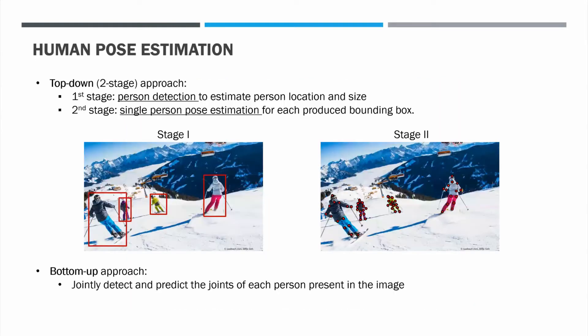There are two main approaches for doing it. The top-down methods take a two-staged approach consisting of a person detection component and a single-person pose estimation one that is run for each produced bounding box. The second type, the bottom-up approach, detects the joints of each person and their location jointly.